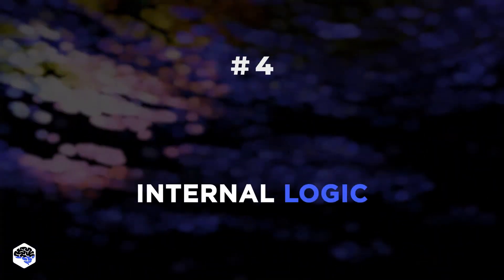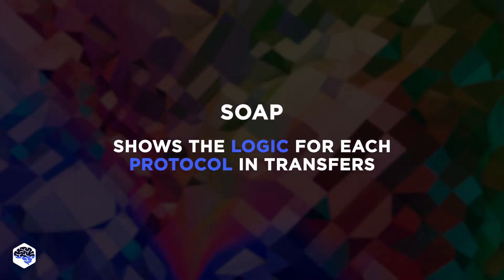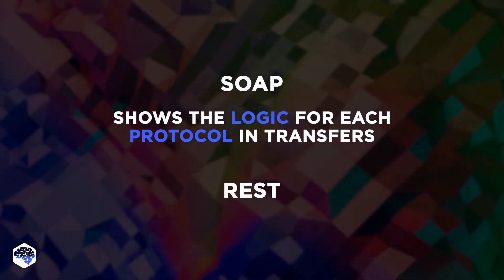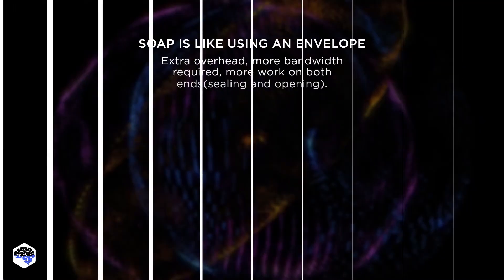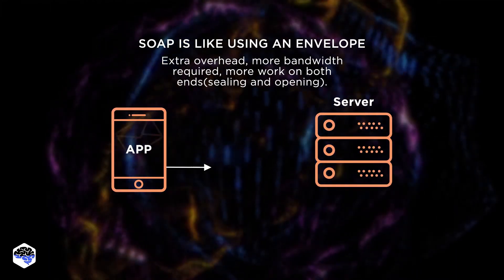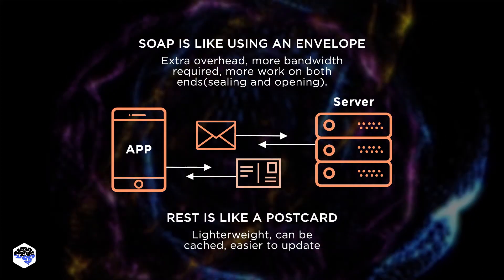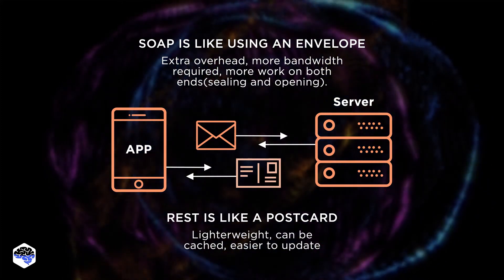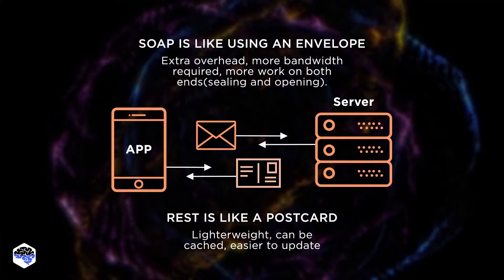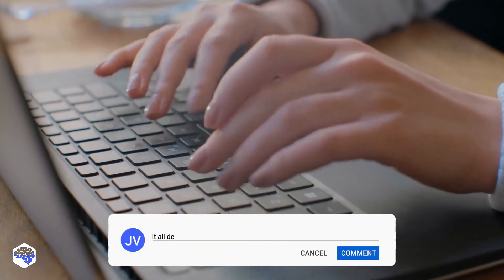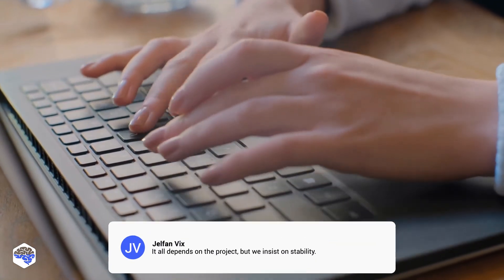The fourth point to compare is internal logic. SOAP shows the application logic for each protocol and data transfers, but REST focuses mainly on naming resources that will be accessed during a transfer. Our experts advise using SOAP for operations that need to be highly controlled and described in detail, but REST requires you to specify less information. Unless you need this fail-proof stability, we advise using REST for most features. So, what would you prefer — fail-proof stability or more features? Share your thoughts under the video.